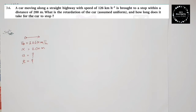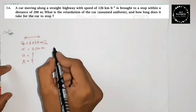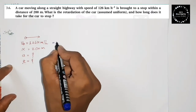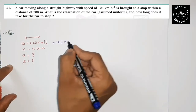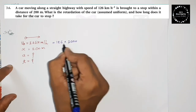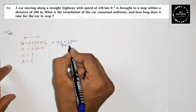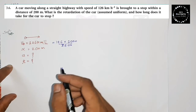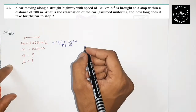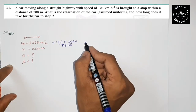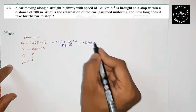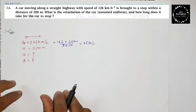First of all, v₀ is equal to 126 kilometers per hour. So you should write 126 into 1000 meters divided by 3600. Use your calculator — pause your video and calculate. It should come out to around 35 meters per second.